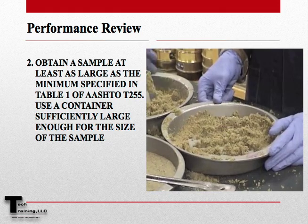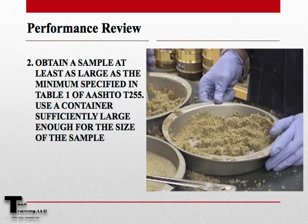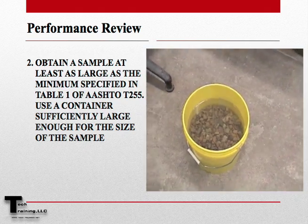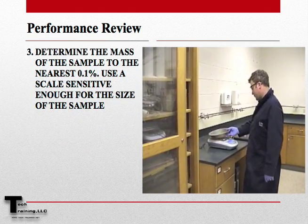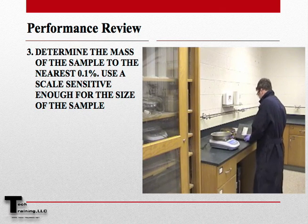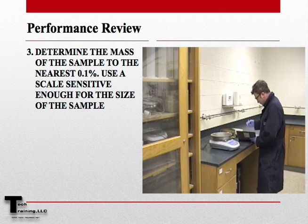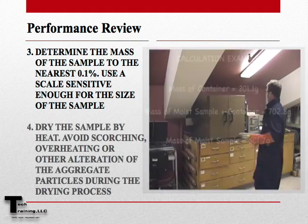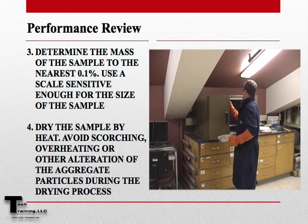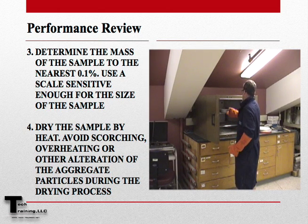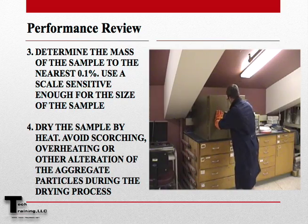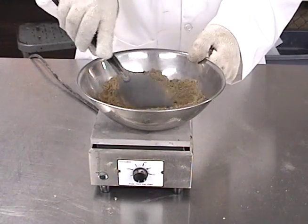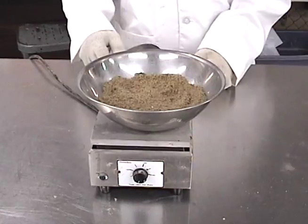Be sure that a container is provided large enough to hold this sample. Determine the mass of the sample to the nearest 0.1%, using a scale which is sensitive enough for the size of the sample. After determining the mass of the moist sample, dry the sample by heat. Avoid overheating, scorching, or other alterations that may occur to the aggregate particles during this process.